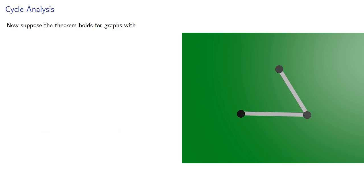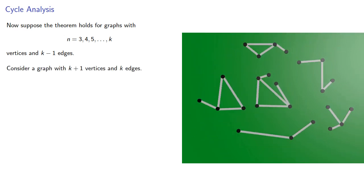Now we'll use strong induction. Suppose the theorem holds for graphs with n equals 3, 4, 5, and so on up to k vertices and edges. Consider a graph with k plus 1 vertices and k edges. If the graph is connected, we're done.